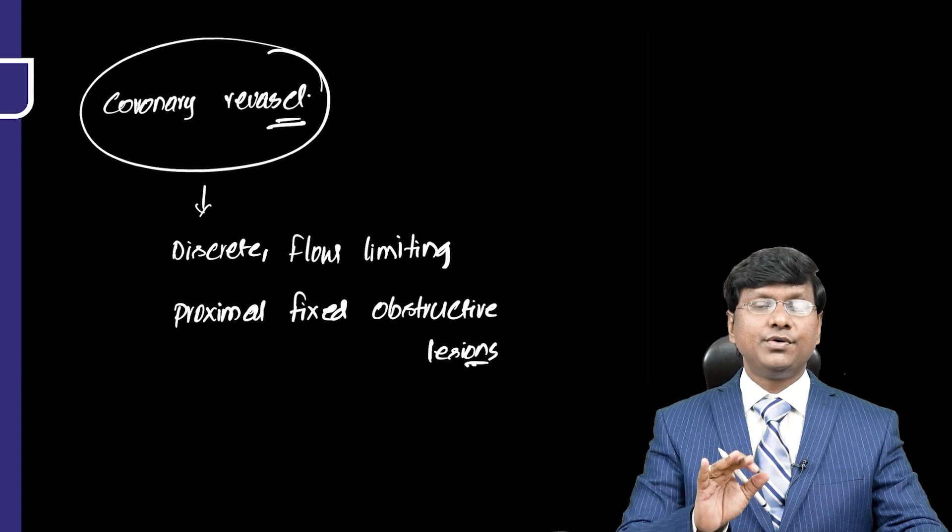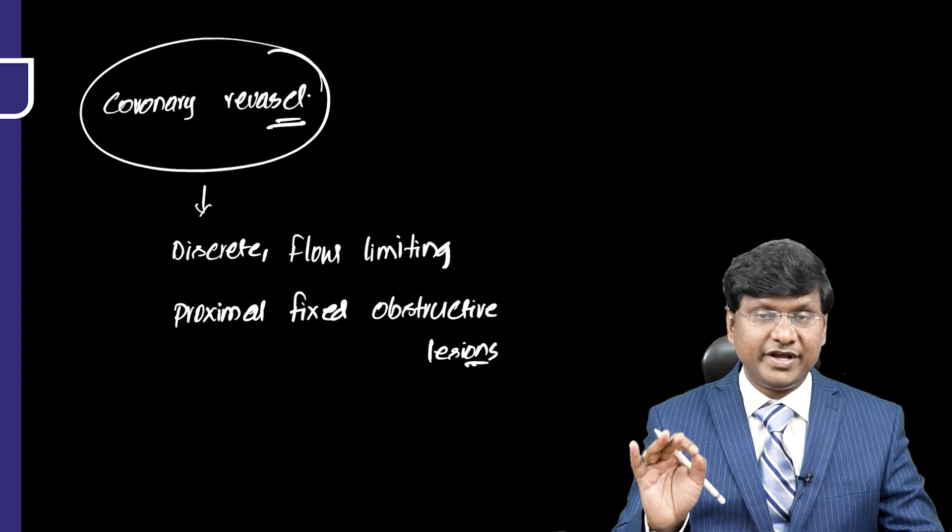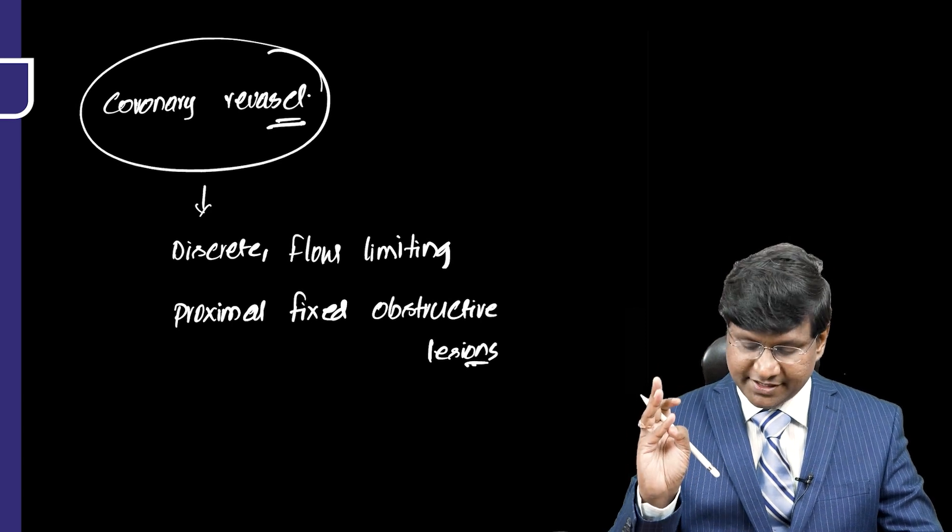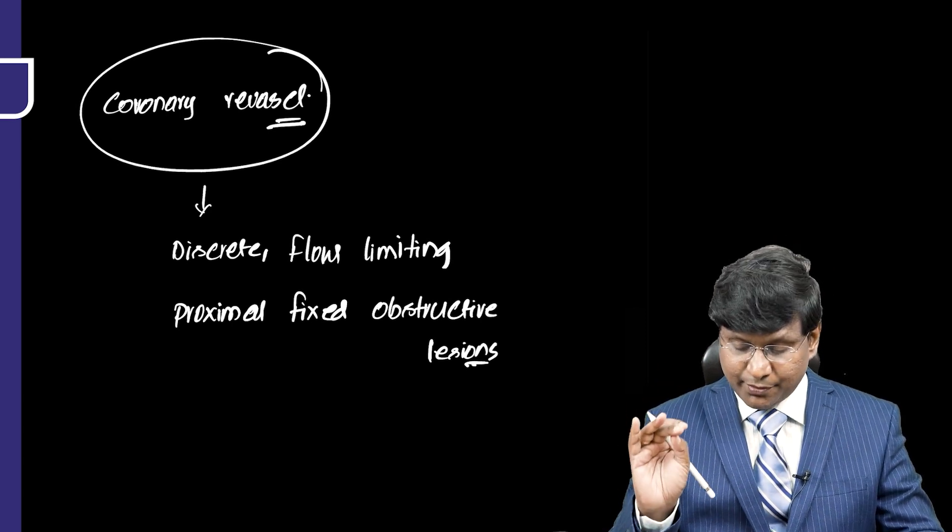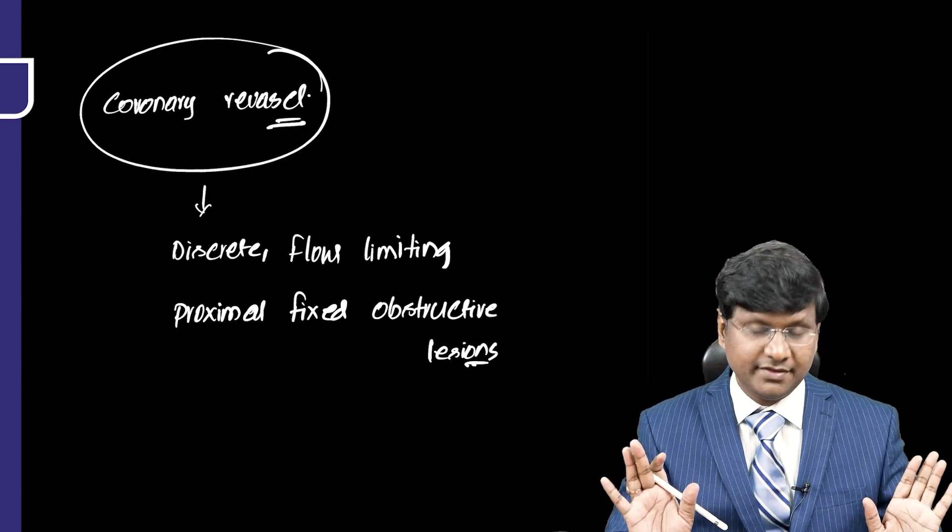So this is about your coronary revascularization. That means when will you do a coronary revascularization? If there is discrete, flow limiting, proximal fixed obstructive lesion, then you have to go ahead with the coronary revascularization.